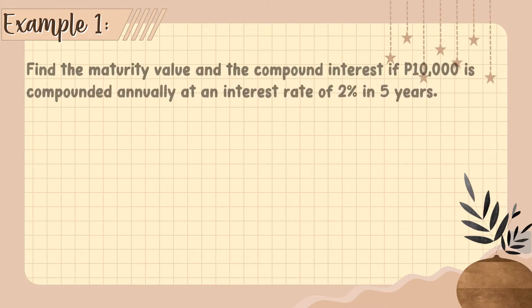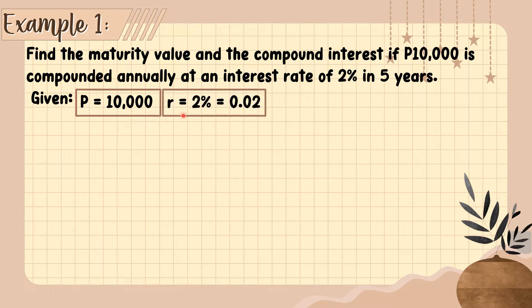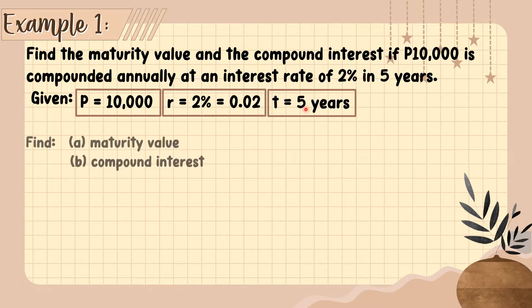Now let's have example number 1. Find the maturity value and the compound interest if 10,000 is compounded annually at an interest rate of 2% in 5 years. The given: principal is 10,000, rate is 2% or 0.02 in decimal form, and time is 5 years.